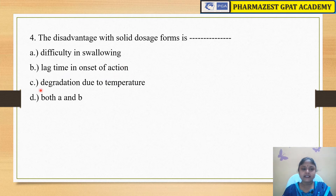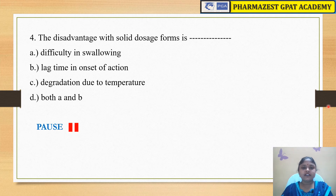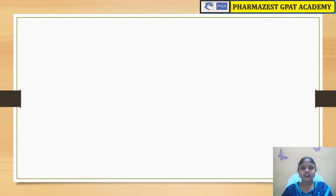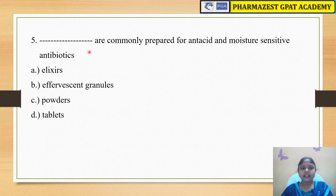The next question is: the disadvantage with solid dosage forms is? The options are A) difficulty in swallowing, B) lag time in onset of action, C) degradation due to temperature, and D) both A and B. The right answer is D, both A and B — that is, difficulty in swallowing and a slow onset of action.